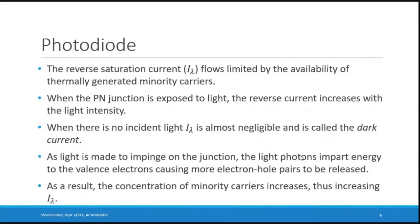When light falls on the p-n junction, the photons impart energy to the valence electrons, causing more electron-hole pairs to be released. The valence electrons gain energy from light and become free electrons, increasing the concentration of minority carriers and thereby increasing the current.